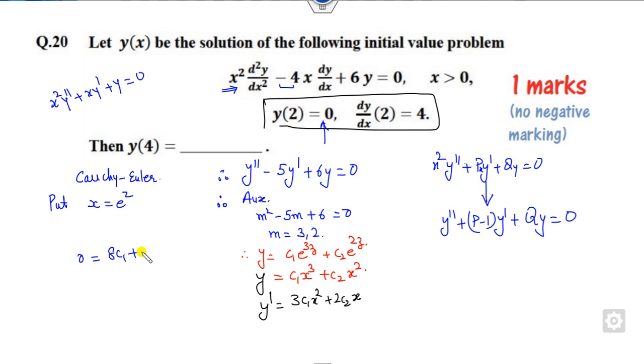When x = 2, the derivative is 4, so 12c₁ + 4c₂ = 4. If you subtract these equations, you get c₁ = 1.